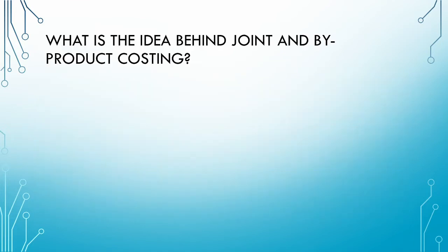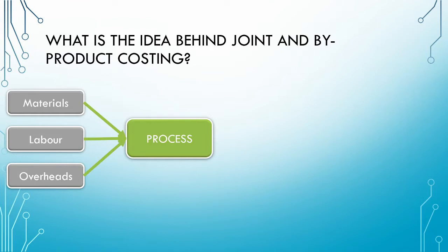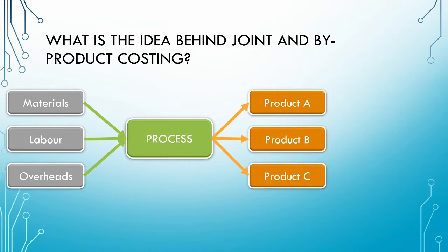Let us begin by considering what is the idea behind joint and byproducts. As with any other manufacturing process, we take our raw materials, labor, and overheads and subject them to the manufacturing process in order to get out a product at the end. The key difference with a joint process is that instead of just getting one product out, we could get two or three or even more products simultaneously from this process.